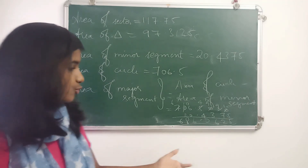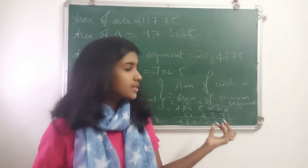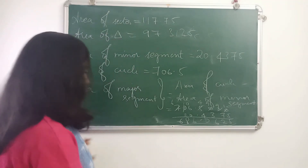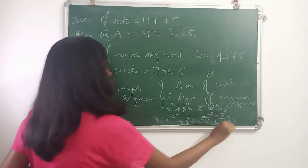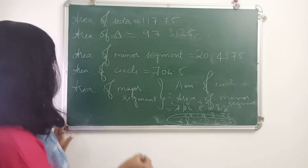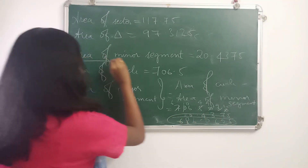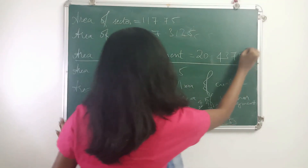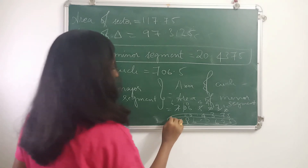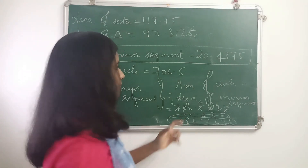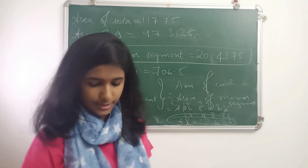The result is 686.0625. This is the area of the major segment. It was asked to find the area of the minor segment and the area of the major segment, and we have found both.